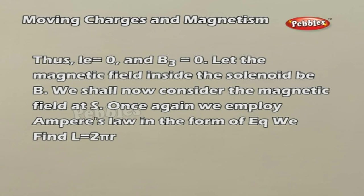Let the magnetic field inside the solenoid be B. We shall now consider the magnetic field at S. We employ Ampere's law in the form of the equation. We find that L equals 2πR.